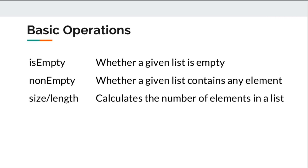There are a few other utility methods helpful for evaluating a list. First is 'isEmpty' — as the name suggests, it checks if a given list is empty or not, and it is available for all collections, both mutable and immutable. The converse is 'nonEmpty', which checks if the list has any elements. You can also use either 'size' or 'length' to find how many elements are in a list — both functions are the same.